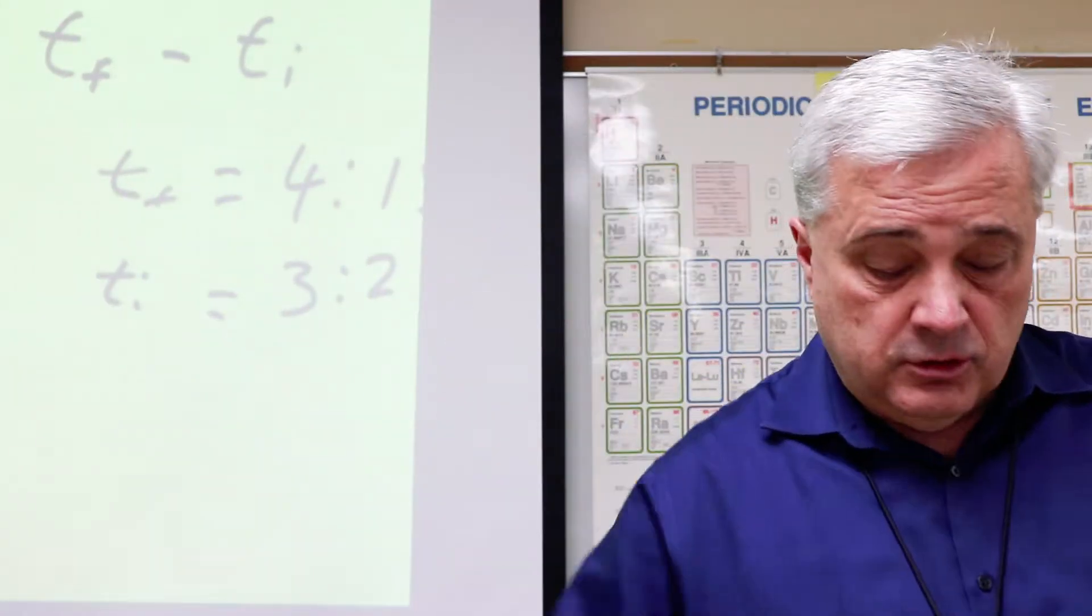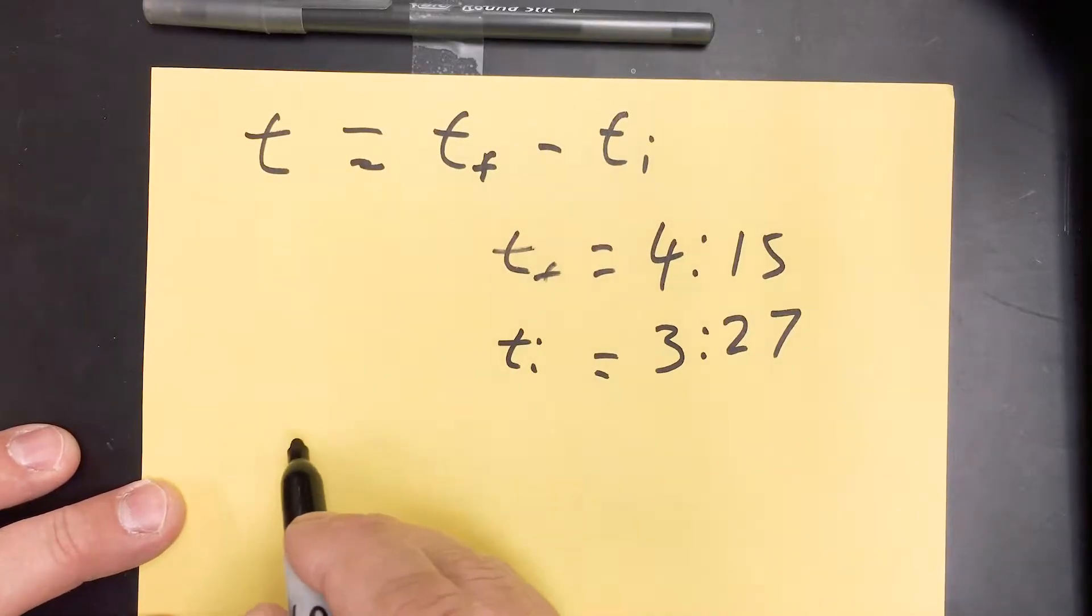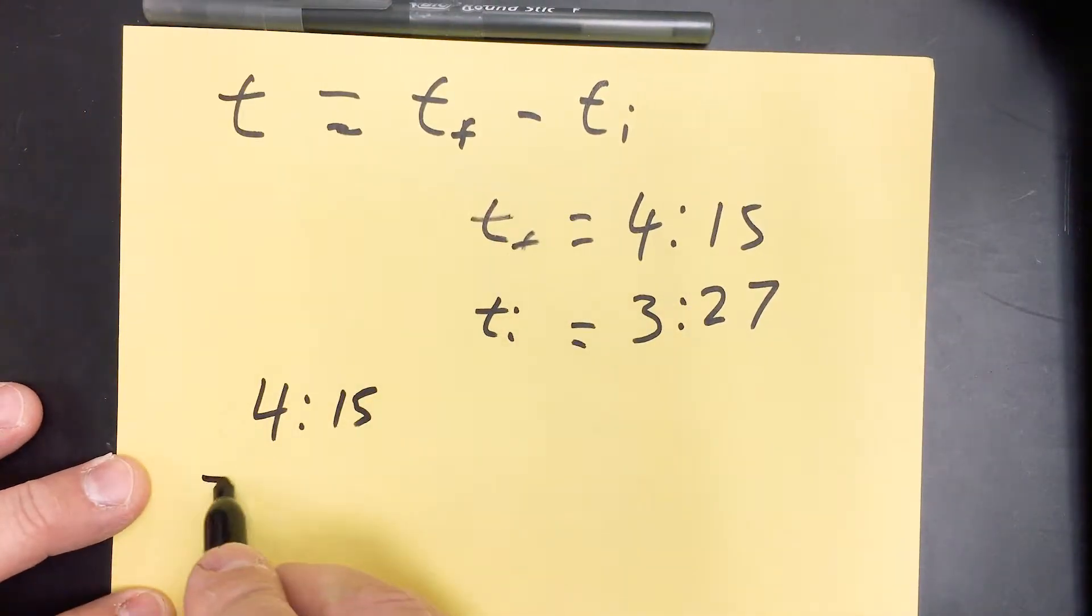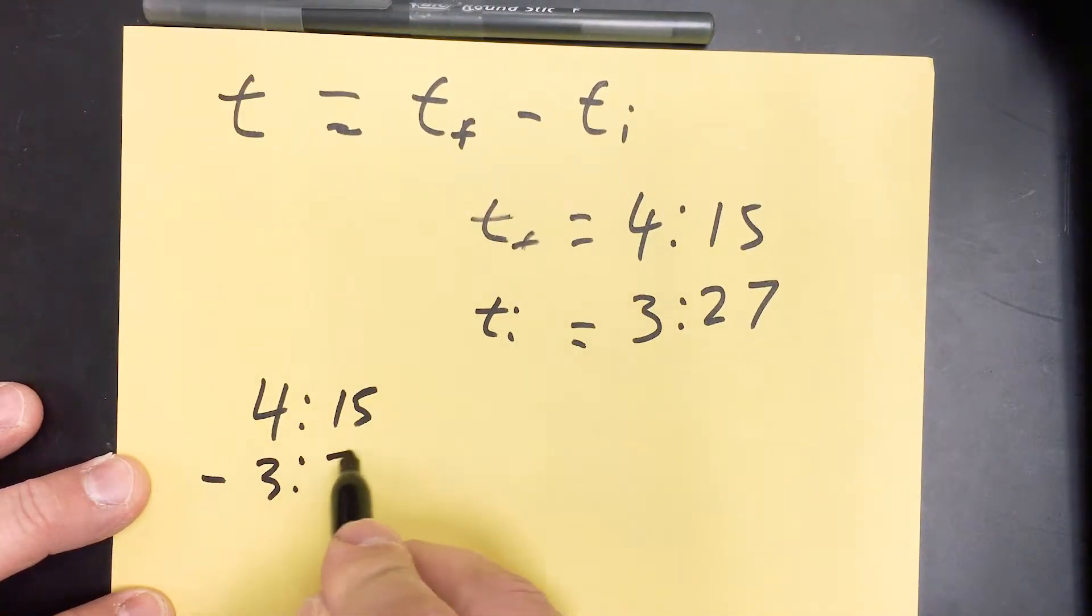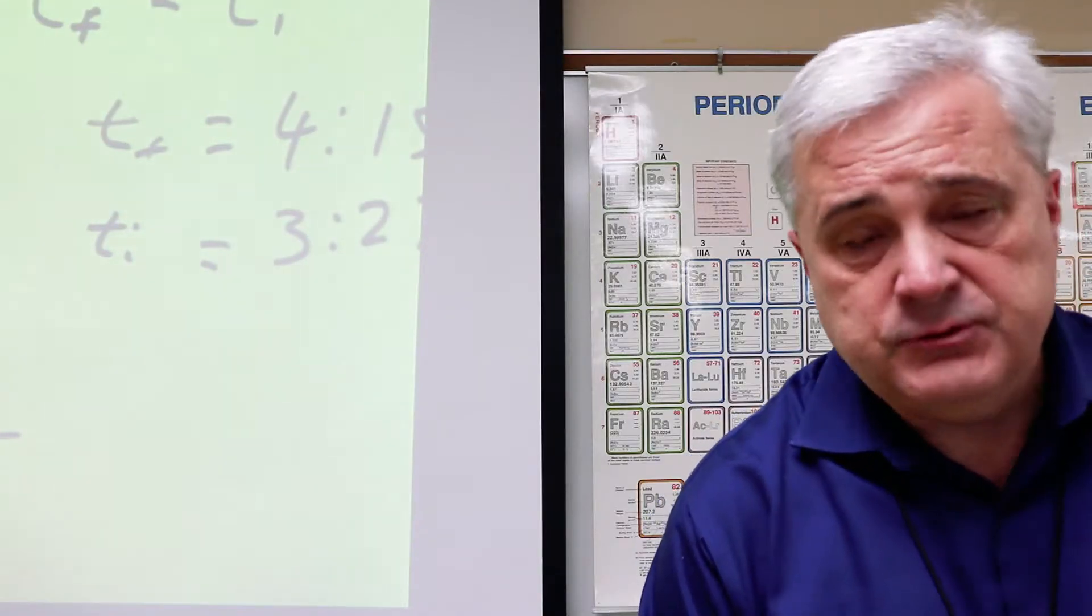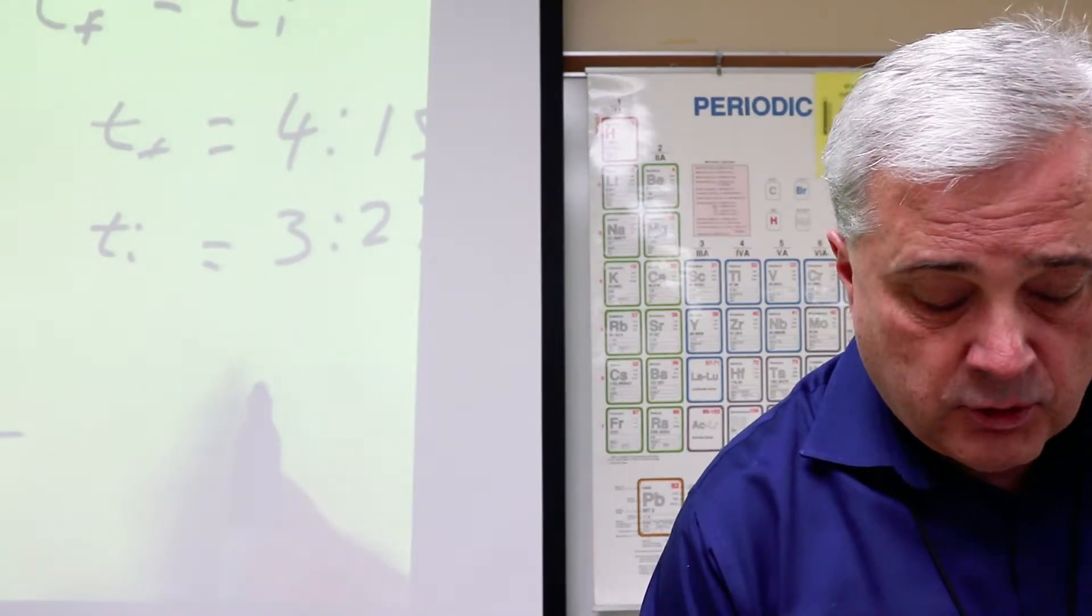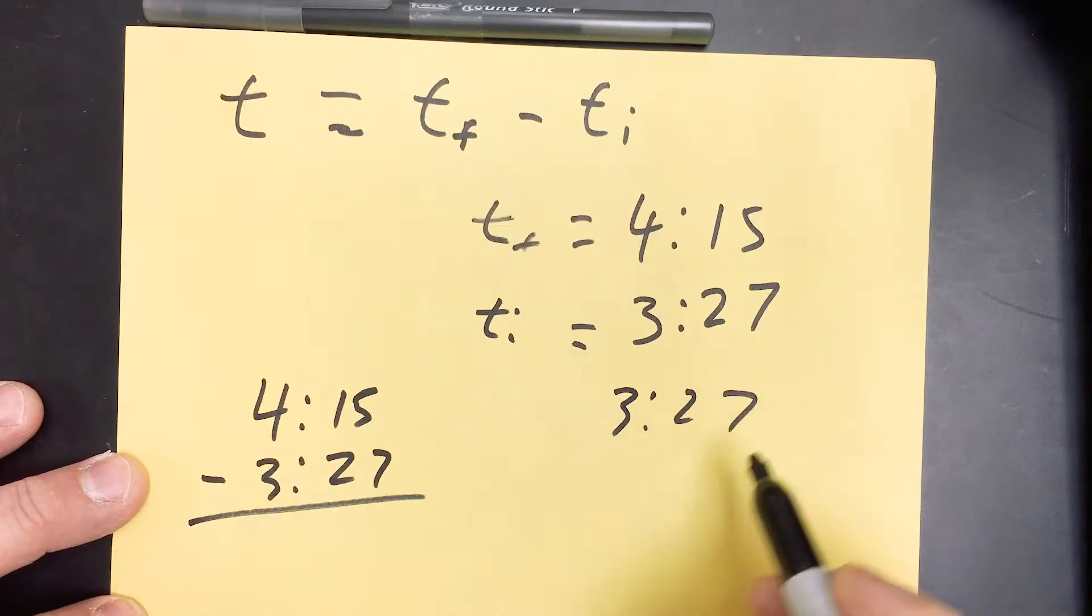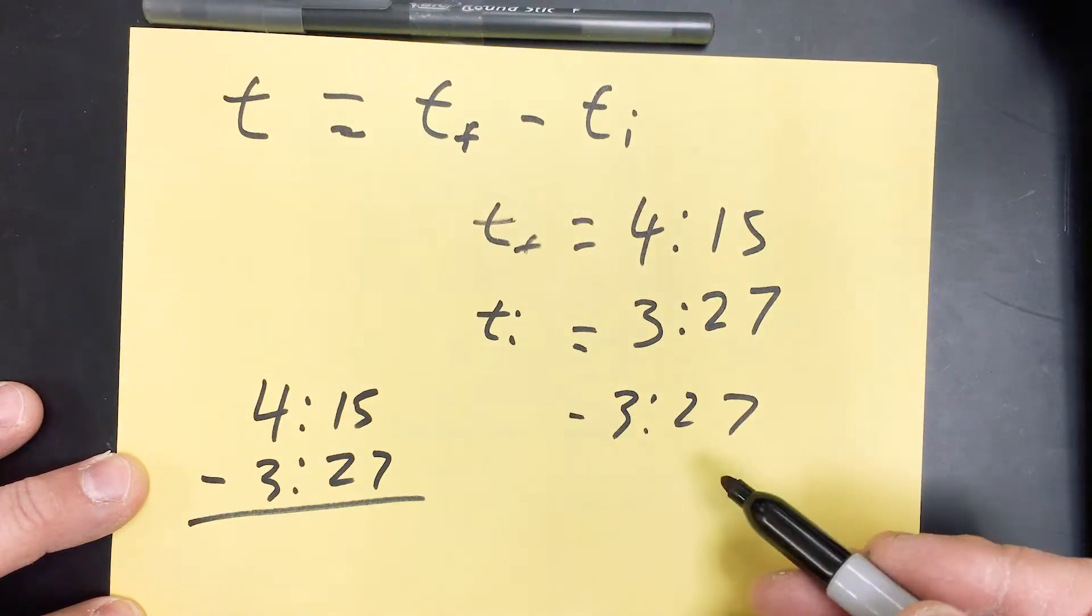I'm going to write it as a vertical subtraction. So I'm going to do 4:15 minus 3:27. Now, before I do this one, I'm going to do a more simple one. I'll just say 3:27 was that time. We'll use that over again. The end of the third lap, let's say the third lap began at 2:15.